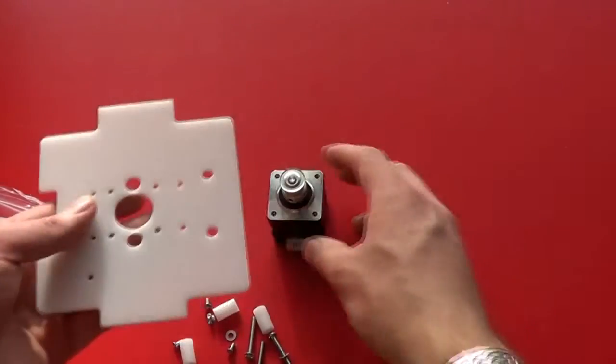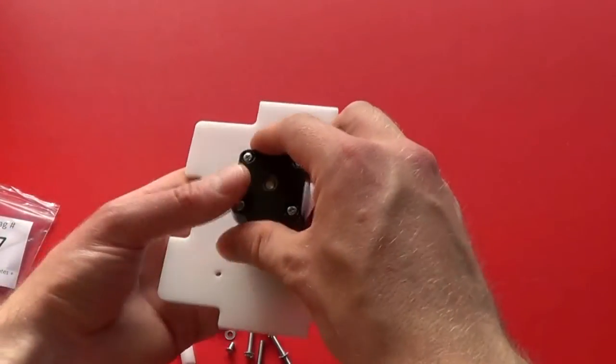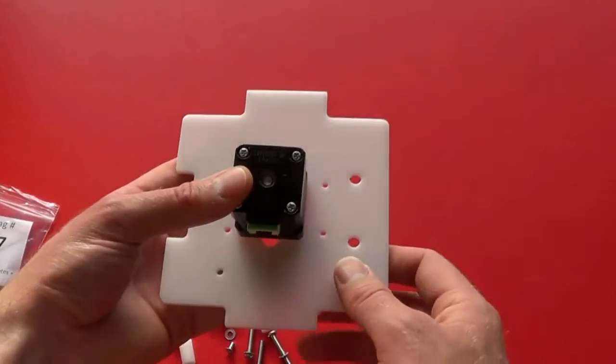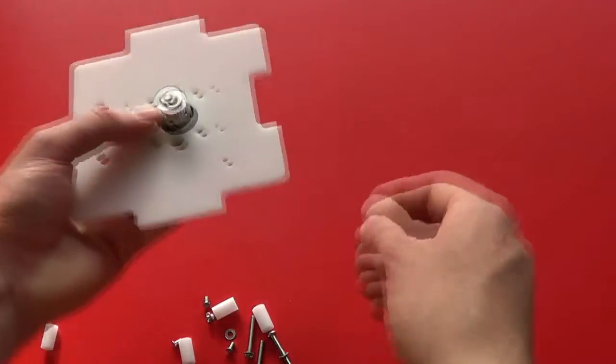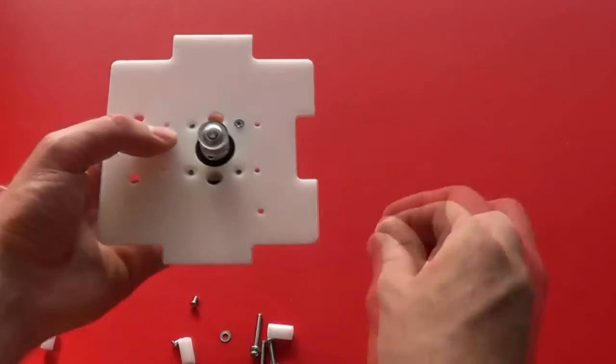So we place the Y stepper motor on top of the carriage plate with the connector pointing forwards and secure it from underneath with four small countersunk screws.